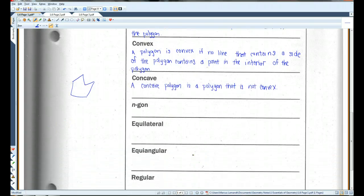An n-gon. An n-gon is a polygon with n sides. So if I say this is a 14-gon, that's a polygon with 14 sides. Or if I say this is a 20-gon, that's a polygon with 20 sides.